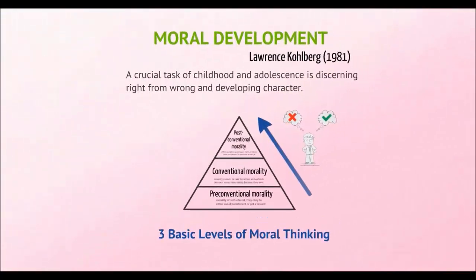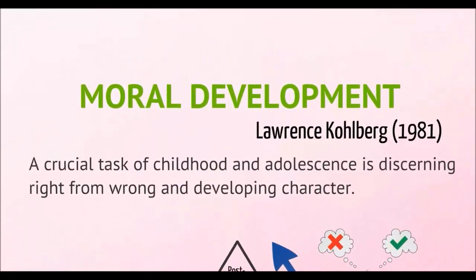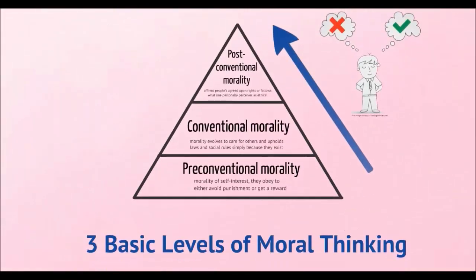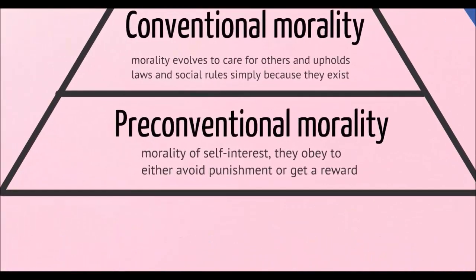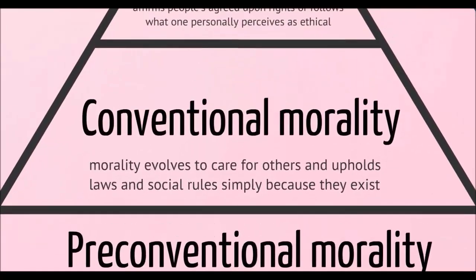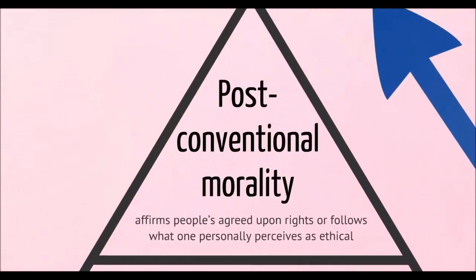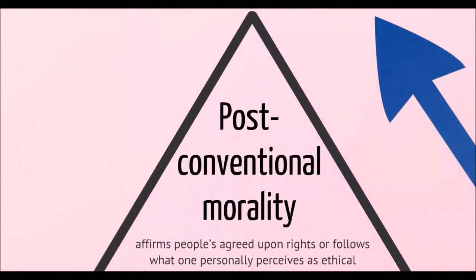Let's move on to Kohlberg and moral development. He stated that a crucial task of childhood and adolescence is discerning right from wrong and developing character. He referred to three basic levels of moral thinking: pre-conventional morality, before age nine, where it's a morality of self-interest and children obey to either avoid punishment or get a reward; conventional morality, where morality involves care for others and upholding the laws; and post-conventional morality, where people have agreed-upon rights that are perceived as ethical.